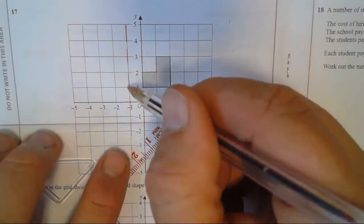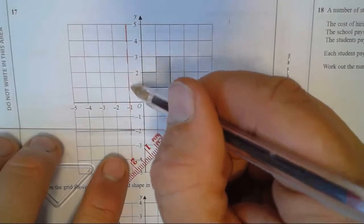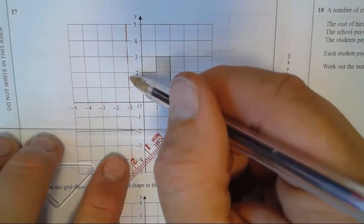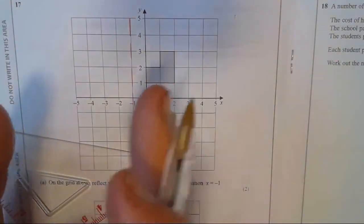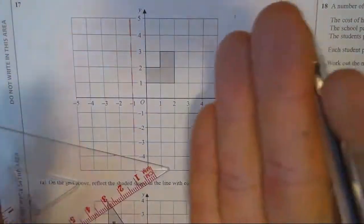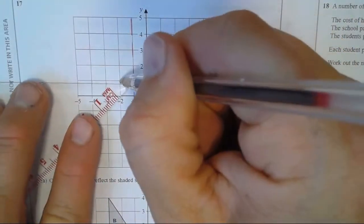The main mistake people made was they drew this in here. That's not right, is it? It's too close to the line of symmetry. It needs to be the same distance either side. So it wants to be here.